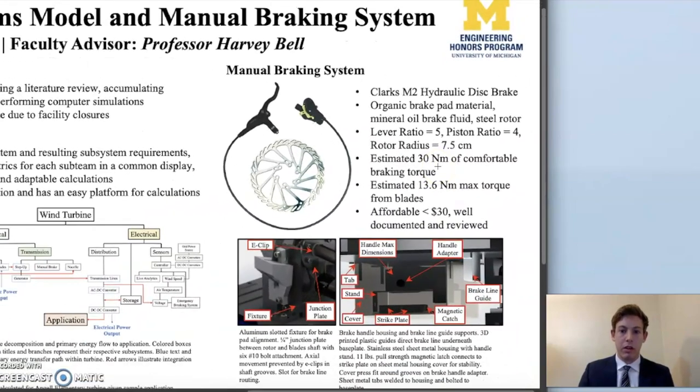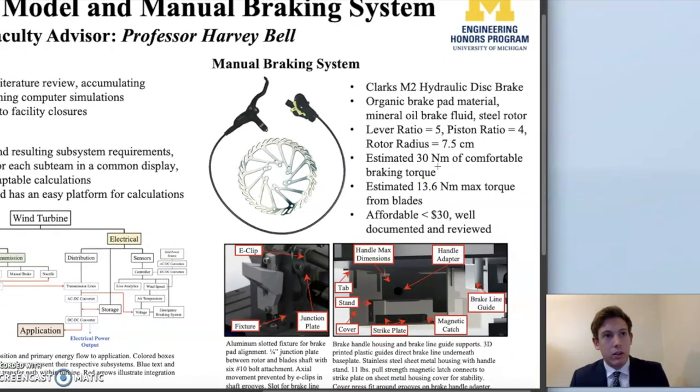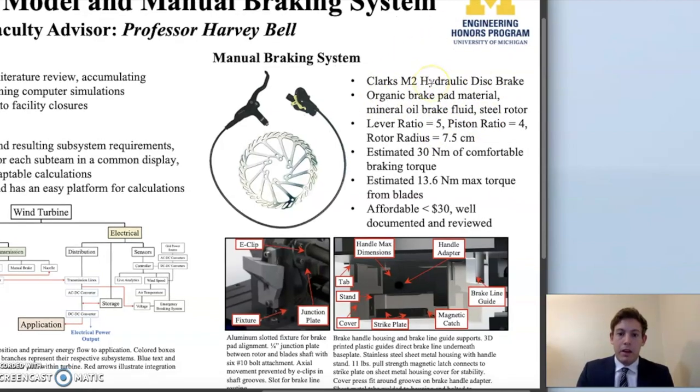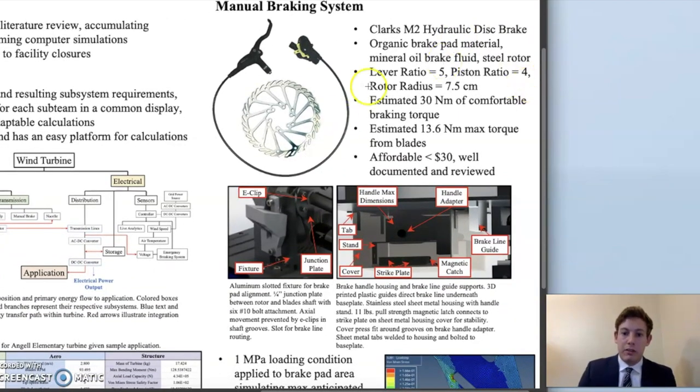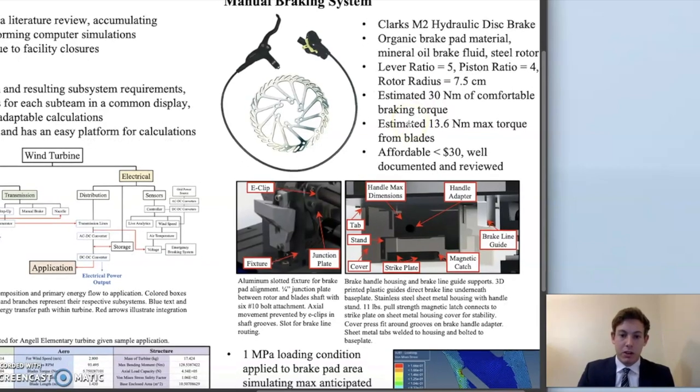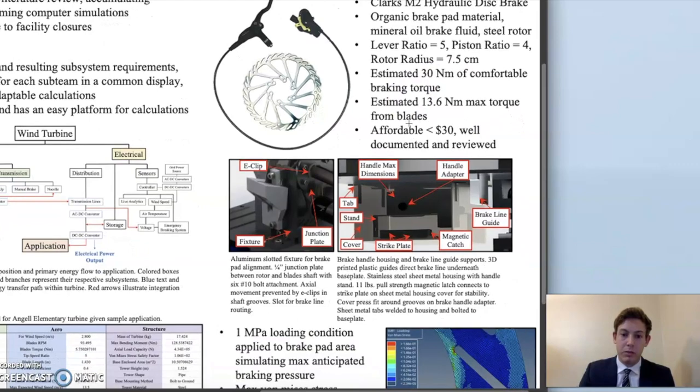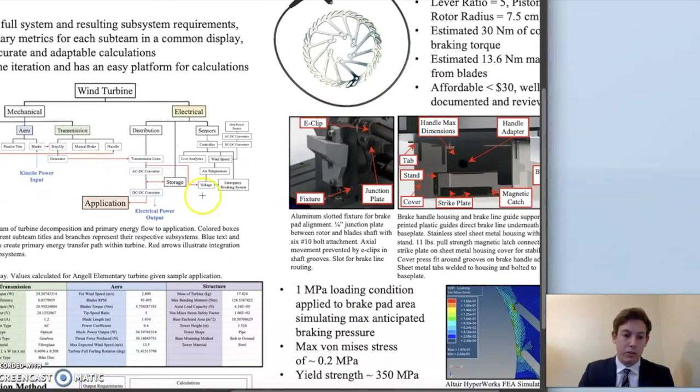Moving on to the manual braking system, the primary metrics that I used in determining the system were supplying a sufficient torque to fully brake the system, being affordable, and also being well documented and reviewed. The brake system I went with is actually a modified bike disc brake design called the M2 hydraulic disc brake from Clark Cycling. It features organic brake pad material, uses mineral oil brake fluid, and has a steel rotor with a total lever to piston ratio of 20. With a rotor radius of 7.5 centimeters, it provides about 30 newton meters of comfortable braking torque to the blades, which exceeds the maximum torque estimated to be produced by the blades from that coarse system model calculations here. Also, it's affordable—it was less than $30 and I have it with me today.